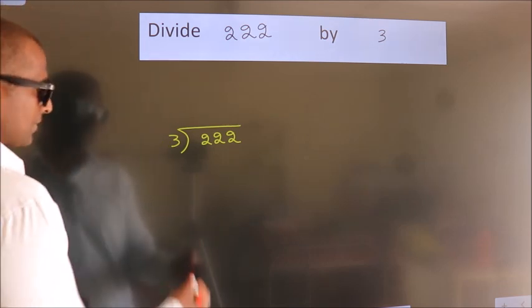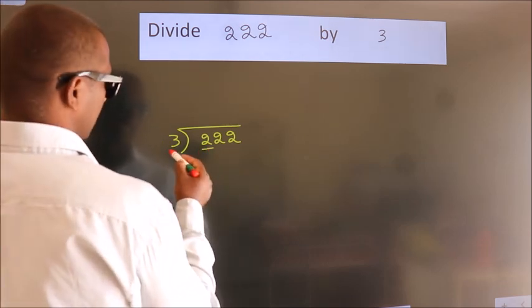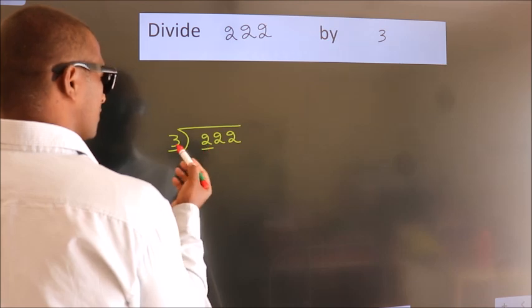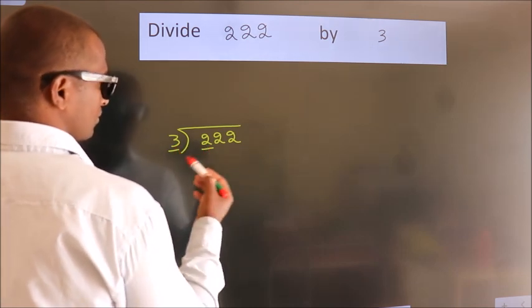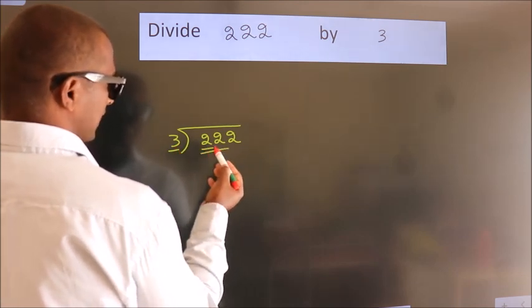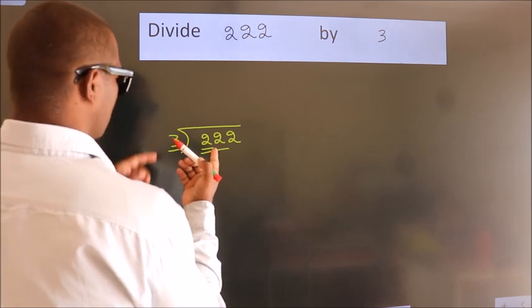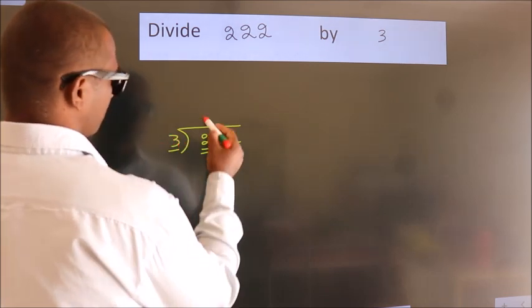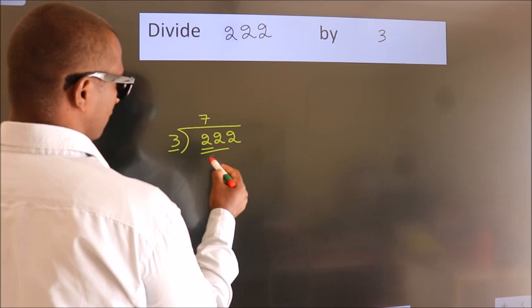Next, here we have 2. Here 3. 2 is smaller than 3, so we should take 2 numbers: 22. A number close to 22 in the 3 table is 3 times 7 equals 21.